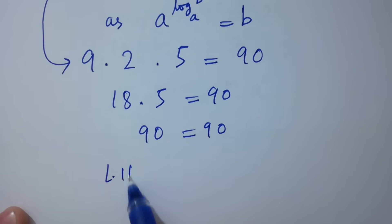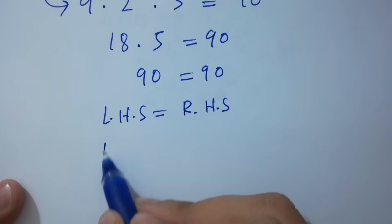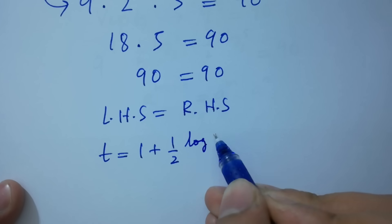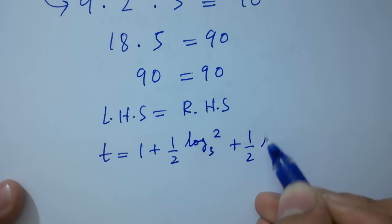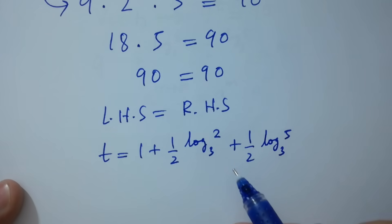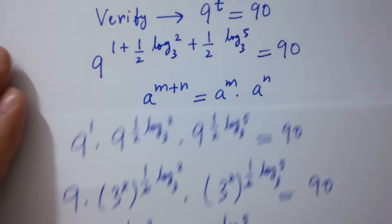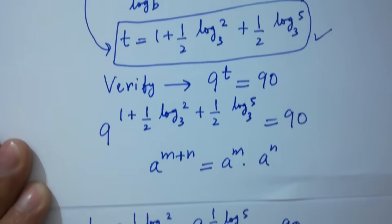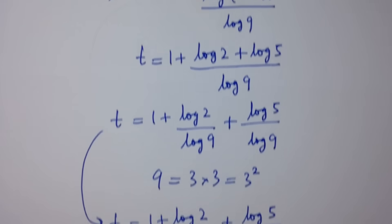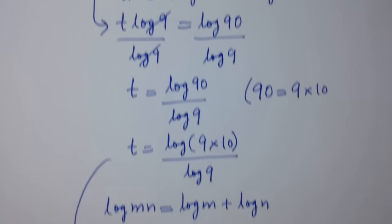Left hand side equals right hand side, which shows that the value of t equals 1 plus one-half log 2 to the base 3 plus one-half log 5 to the base 3 satisfies the equation. Thanks for watching this video. Please subscribe to this channel to get notifications of new videos, and don't forget to share these videos with your classmates and friends so they can also benefit. You can also visit the playlist of this channel to learn more.